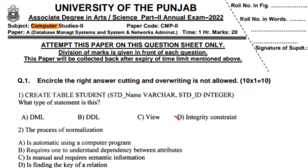The process of normalization — write optional B — requires one to understand dependency between attributes.